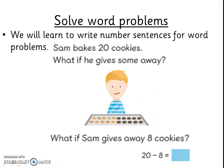Then we will learn to write number sentences to match word problems. This number story tells us Sam bakes twenty cookies and gives away eight. We write a number sentence by thinking about the numbers in the story. We know Sam baked twenty cookies, so we will write twenty as the first number. We know he gave away eight — to give away means having less — so we must write the take away sign before writing eight, which is how many cookies Sam gave away. The number sentence for this number story will be twenty take away eight.